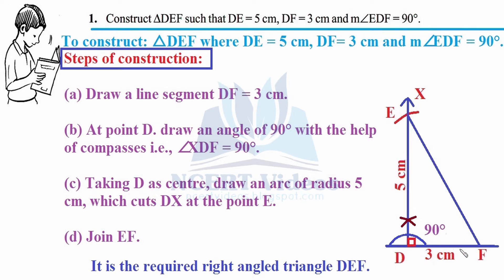Step B: at point D, draw an angle of 90 degrees with the help of compasses — that is, angle XDF equals 90 degrees. You may use a protractor, but since you have studied how to construct with compasses, let's revisit it. Your line segment DF is 3 cm. Now make a perpendicular — 90 degrees — represented by the square box symbol.